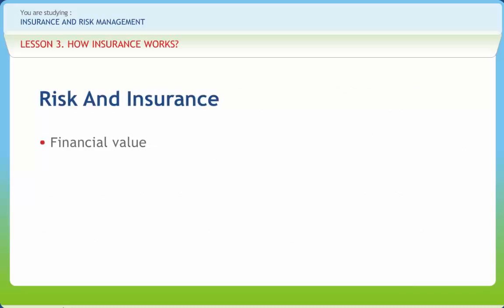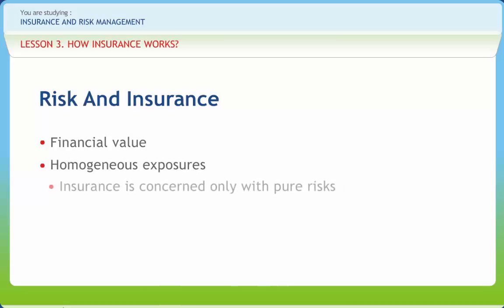Financial Value: The risk must involve a loss that is capable of financial quantification. Insurance is concerned only with situations where monetary compensation is given following a loss. Homogeneous Exposures: If there are thousands of people or properties having similar exposures, then the contributions could be comparatively small as the percentage of losses on the whole will decrease. Insurance is concerned only with pure risk. Speculative risk, where there is possibility of some gain, cannot be insured.